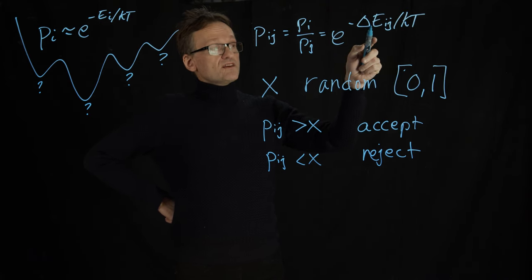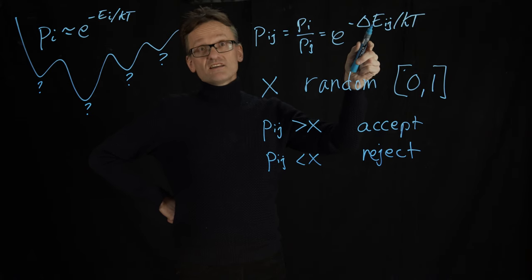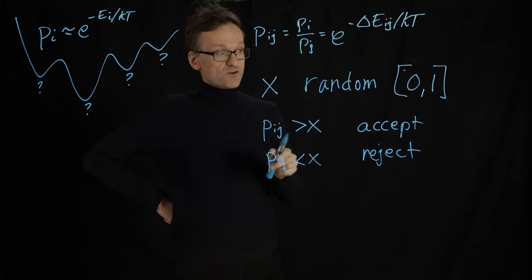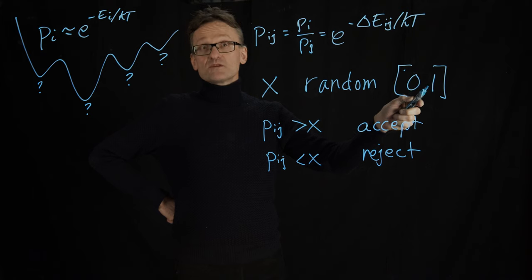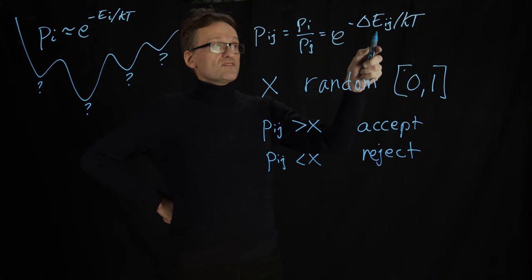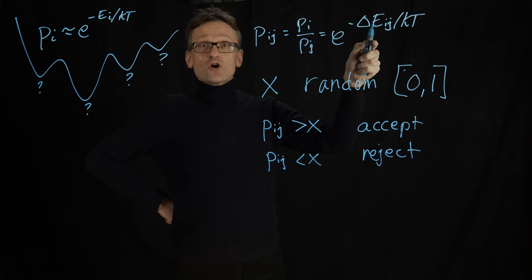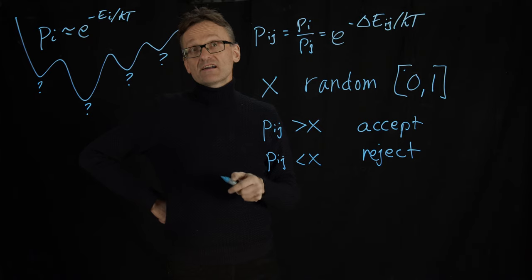On the other hand, if the barrier is uphill but it's small, it's going to be a negative number close to 0. It's going to be just under 0. And then it's very likely that x will actually be smaller than that, and then you will probably take the move anyway. But if the energy difference is very large and uphill, this will be a very small number, and then it's very likely that you will reject it.